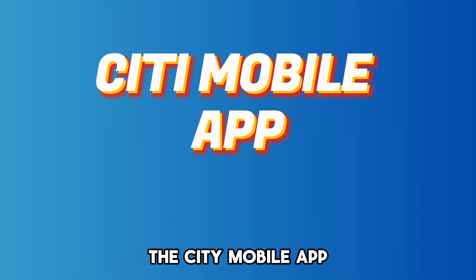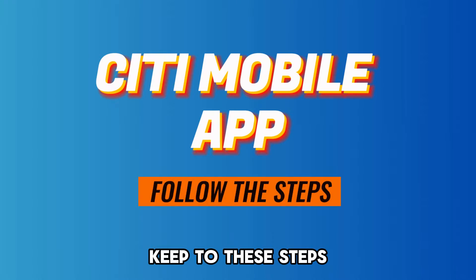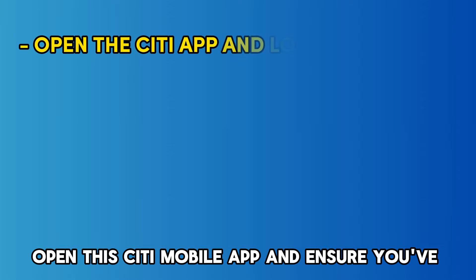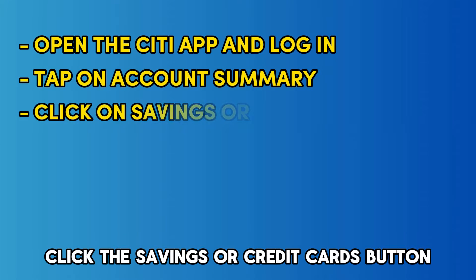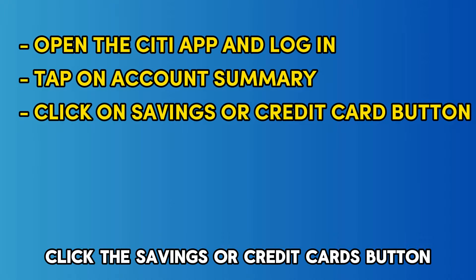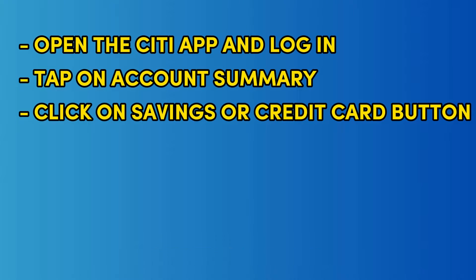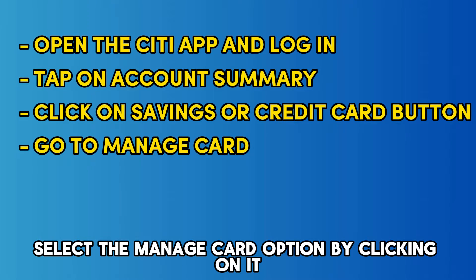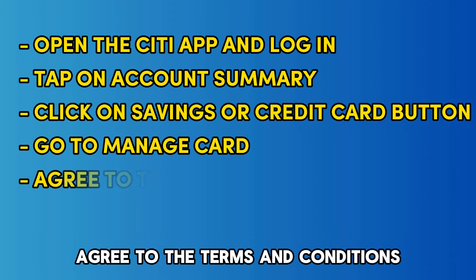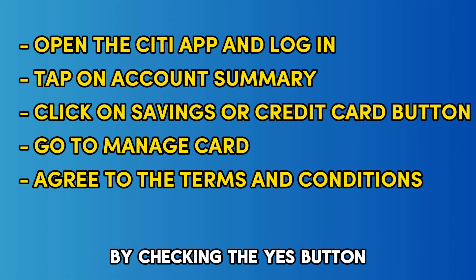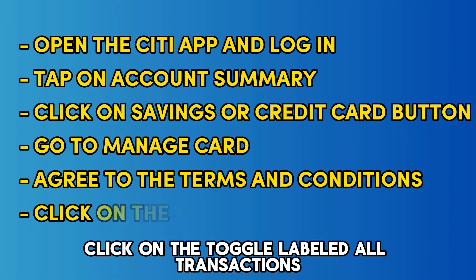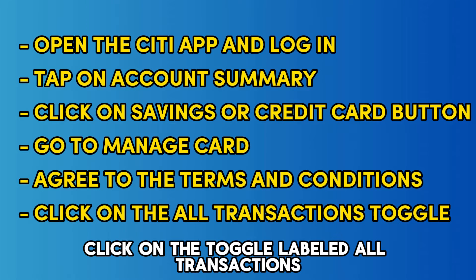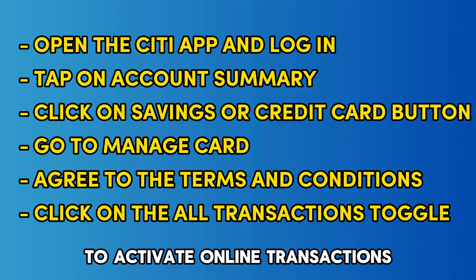The Citi Mobile app. Keep to these steps. Open the Citi Mobile app and ensure you've logged in. Tap on the account summary button on the homepage. Click the Savings or Credit Cards button on the loaded page. Select the Manage Card option by clicking on it. Agree to the terms and conditions by checking the Yes button. On the page that loads, click on the toggle labeled All Transactions to activate online transactions.